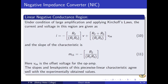In the linear negative conductance region, under conditions of large amplification and applying Kirchhoff's laws, the current and voltage are given as I = −(R2/(R1 × R3)) × V + [(R2 + R3)/(R1 + R3)] × V_offset. The slope of the characteristics is M11 = −R2/(R1 × R3), where V_OS is the offset voltage for the operational amplifier. The slopes and breakpoints of this piecewise linear characteristics agree well with the experimentally obtained values.